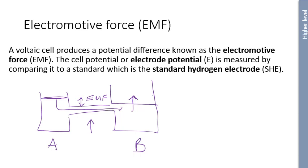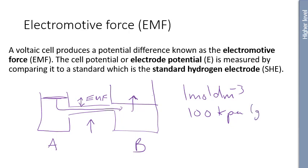In a voltaic cell, the cell potential is generated by moving electrons from the anode to the cathode via the circuit. The cell potential is defined as the potential difference between the cathode and anode when the cell is operating. The cell potential also depends on the concentrations of the species involved under standard temperature and pressure. Under standard conditions: concentration is one mole per dm³, pressure is 100 kilopascals for gaseous reactions, and one atmosphere for non-gaseous reactants. The cell potential under these conditions is called the standard cell potential.